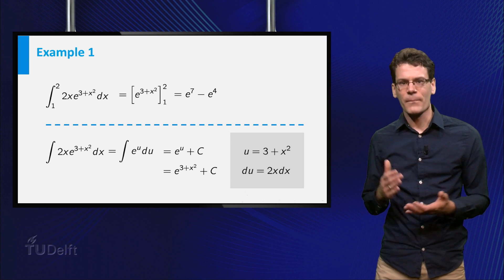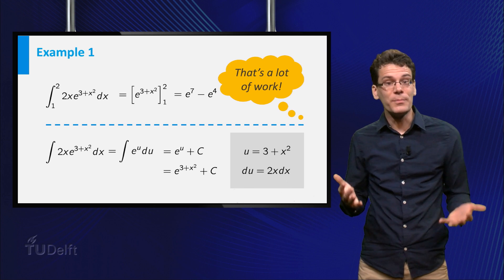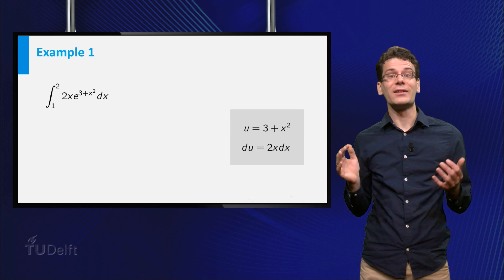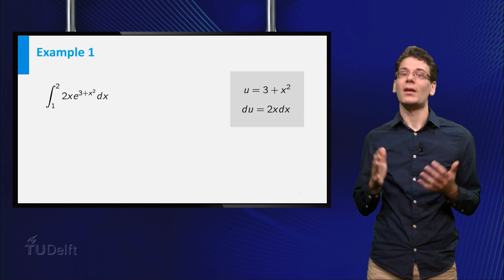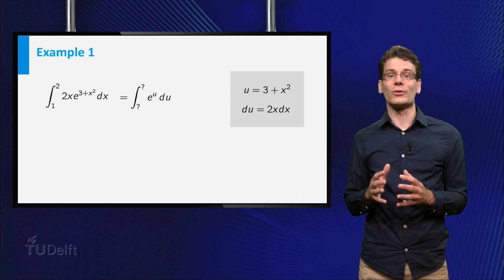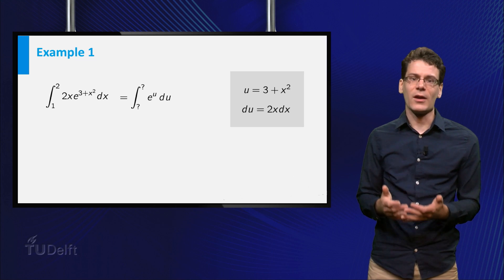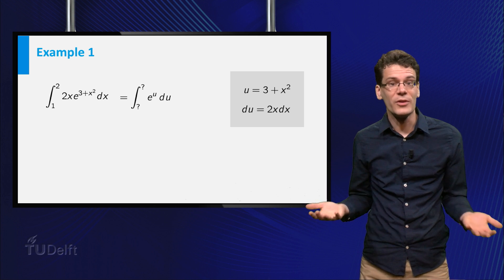Now you may think that is a lot of work, and you would be right. But there is a faster method. We can use substitution directly in the integral with boundaries. First we rewrite the integral as we are used to do. The only new thing we have to think of is what to do with the boundaries.